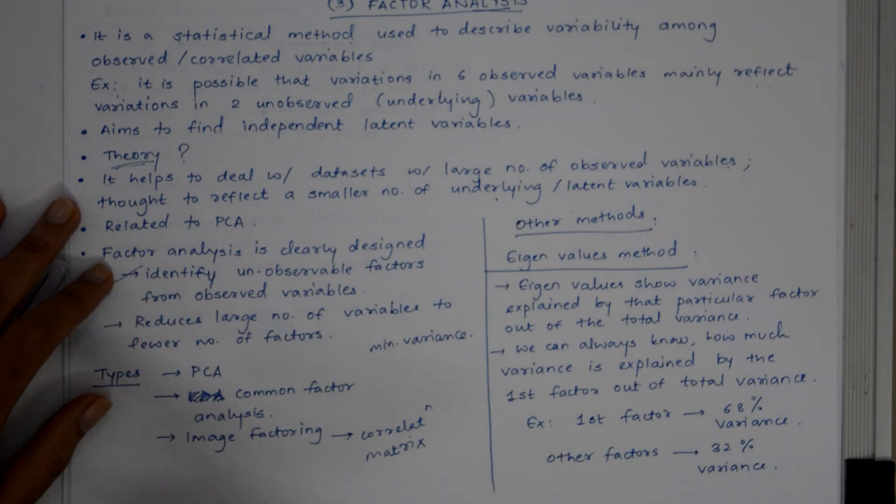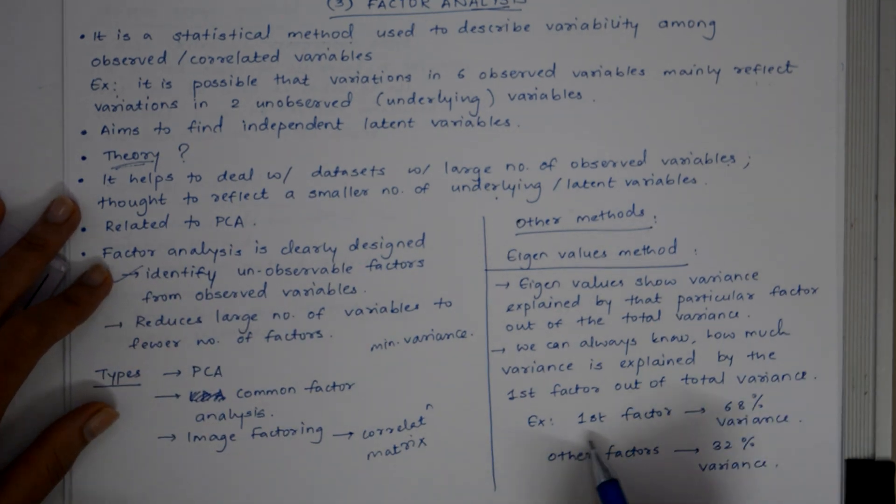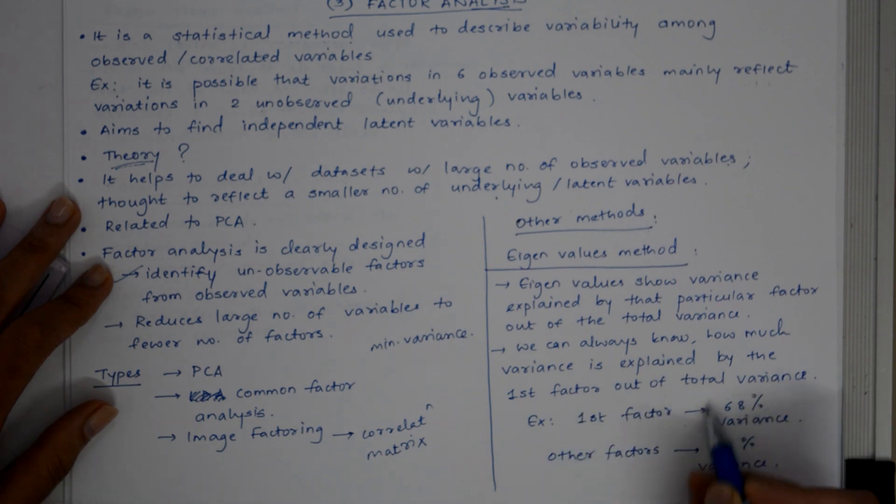We can always know how much variance is explained by the first factor out of the total variance. Suppose my first factor gives me a variance of 68%, we can know that other factors should have 32% variance.